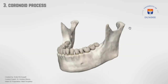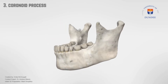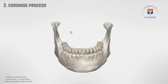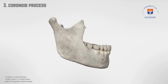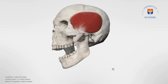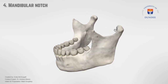Coronoid process is a triangular plate of bone that projects upwards and forwards slightly. The medial surface and the margins of the coronoid process are the sites of attachment for the temporalis muscle. Mandibular notch, also known as the coronoid notch, is a curved depression on the upper border of the lower jaw.